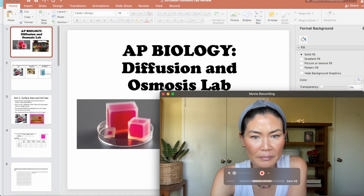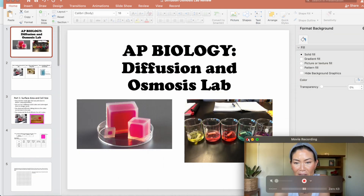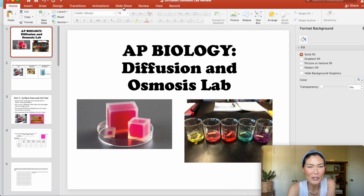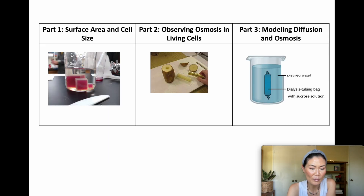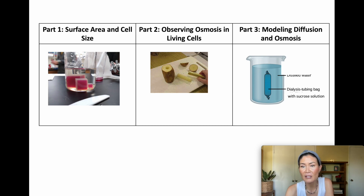So in this video, I'm going to talk about our diffusion osmosis lab that we did in class. I'll upload the lab document to my Google Drive and link it in the info box below. So, AP Biology diffusion and osmosis lab — we did three days of it. There were three parts: part one was calculating surface area and volume of three different size cells (small, medium, large), part two was observing osmosis in living cells — specifically potato cells — and part three was modeling diffusion and osmosis using dialysis tubing.